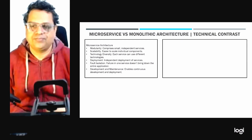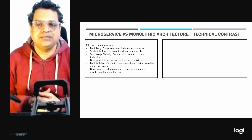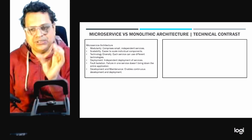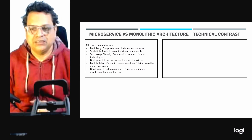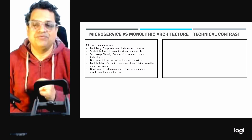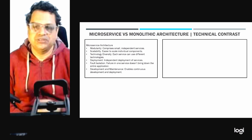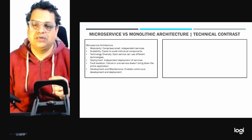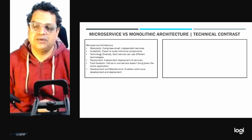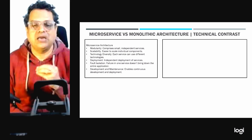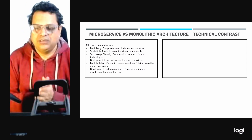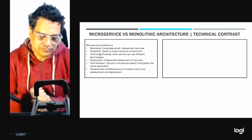The next factor is fault isolation. In a monolithic architecture, a fault impacts the complete application. But in microservices, a fault is contained to a particular microservice — the rest of the ecosystem continues working as usual. The final key factor is development and maintenance, which is ideal for large teams and long-term projects as it allows multiple teams to work in parallel, which is not easily possible in monolithic architecture.